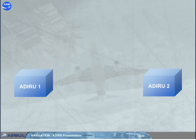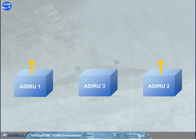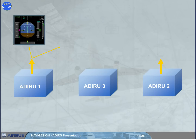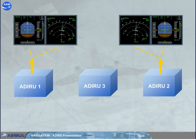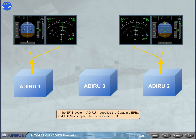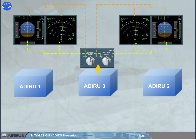Independent data is supplied by each ADRU. For example, in the EFIS system, ADRU1 supplies the captain's EFIS, and ADRU2 supplies the first officer's EFIS. ADRU3 is available as a backup to either EFIS system via the switching panel.